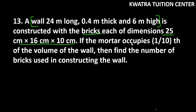Now it says the mortar occupies 1 by 10th of the volume of the wall. That means mortar has taken up 1 by 10th of the wall's volume. So the remaining 9 by 10 of the wall is where the bricks can be placed.